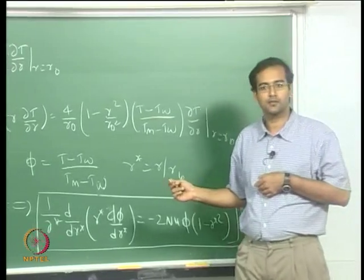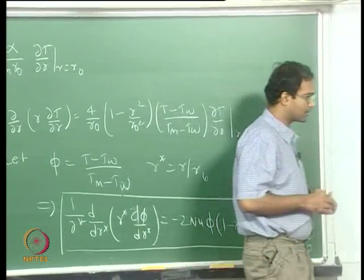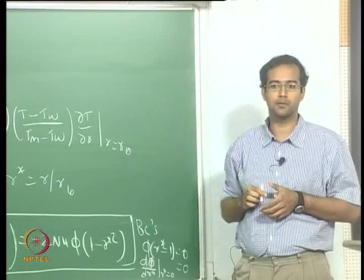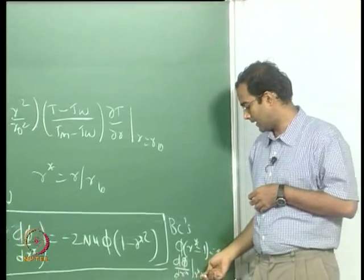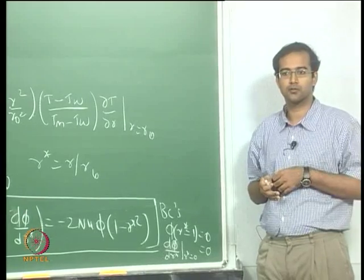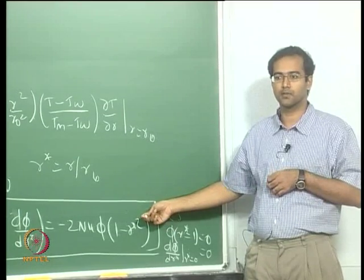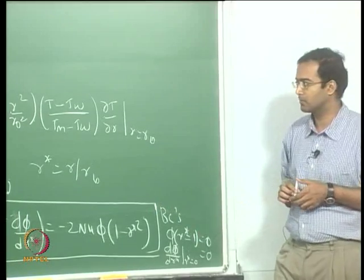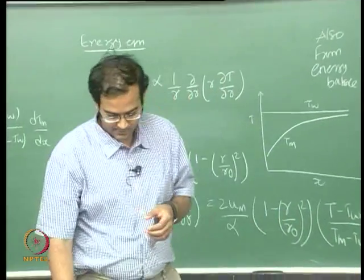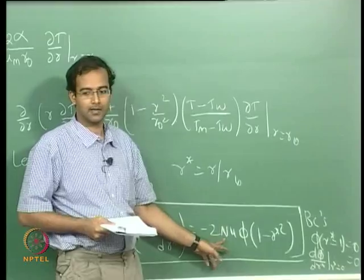This ODE can be solved by the shooting method iteratively. Looking at the boundary conditions: phi at R* equal to 1 (corresponding to R equal to R_0) should be 0 because there T equals T_wall; and at R* equal to 0 the profile is symmetric so the slope must be 0. These are the two boundary conditions for this second-order ODE, which we solve using the shooting technique to also get the value of Nusselt number.